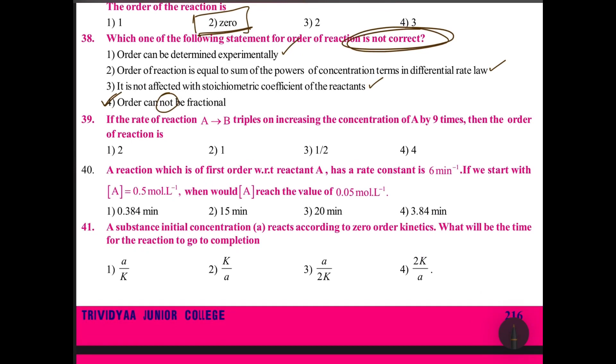If the rate of a reaction triples on increasing the concentration of A by 9 times... Now concentration of A from 1 to 9 you are increasing, means 9 times increased. Rate changes from 1 to 3, triples. That means this also you need to write in terms of 9. 9 to the power of 1/2 is equals to 3. Root 9 is equals to 3, so the order is 1/2. Don't confuse with this.